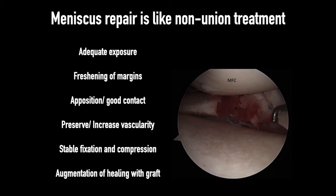Meniscal repair is just like non-union treatment. We need adequate exposure — if not adequate, you can do pie-crusting and various positioning maneuvers. We have to freshen the margin, just like in non-union surgery, using low-suction shavers, diamond rasps, and trephination techniques. Good apposition and contact are very important, using good-quality sutures like Orthocord. To preserve and increase vascularity, trephination can be done. Stable fixation and compression with SMC knot and Orthocord are important, and augmentation of healing with fibrin clot — analogous to bone graft in non-union — or additional procedures like ACL or PCL surgery can enhance repair.